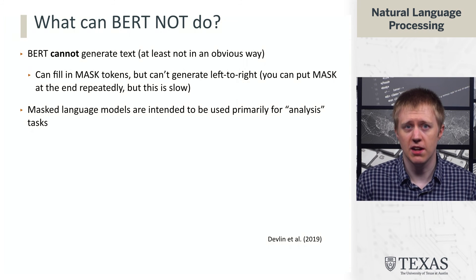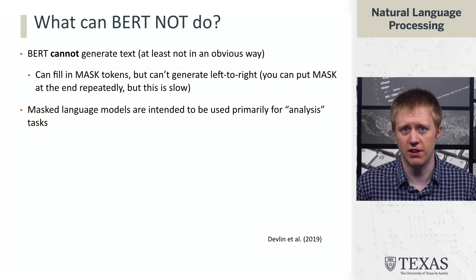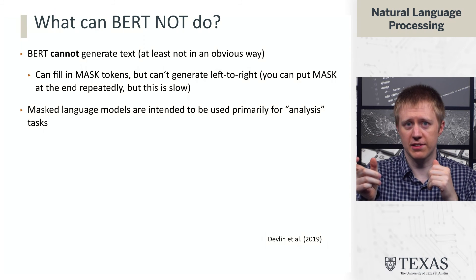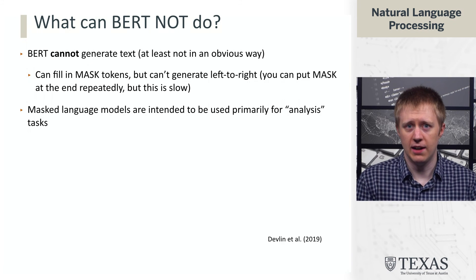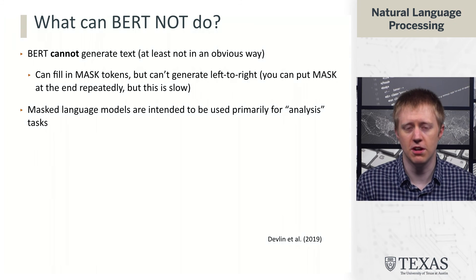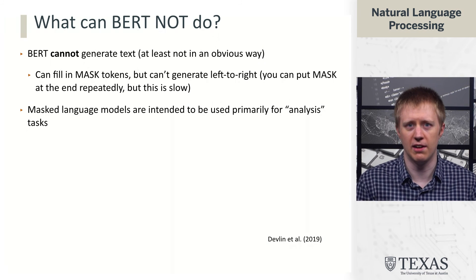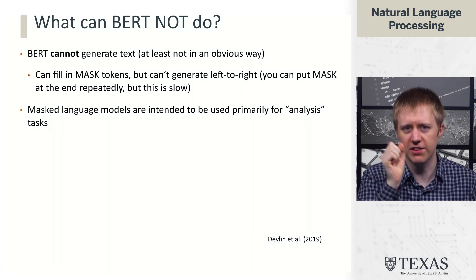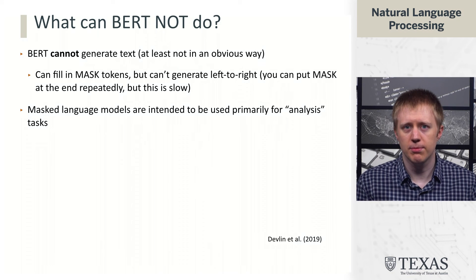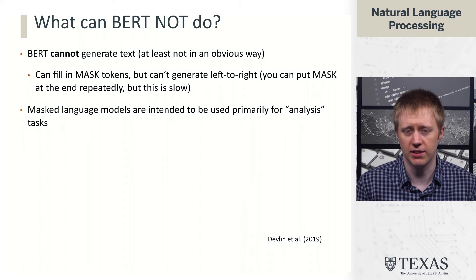BERT cannot do well is generate text. The only way to do this is to populate a whole sequence up to a point, stick a mask token on the end, and fill in that mask token. The problem is that this ends up being order n-squared in the length of what you want to generate, because as soon as you fill in that mask token, you need to rerun the whole computation with another mask token. These models were not intended for text generation — they were intended for analysis tasks like sentiment classification.